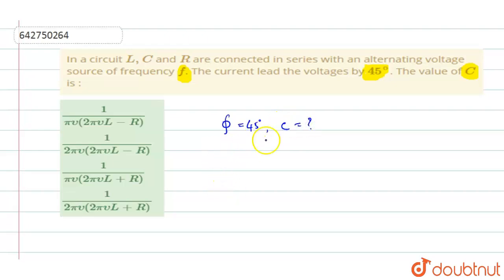So they are talking about the phase angle. The equation related to the phase angle is tan phi. Tan phi is equal to XL minus XC divided by R, where XL is inductive reactance, XC is capacitive reactance and R is resistance.